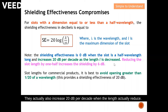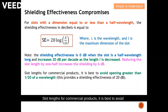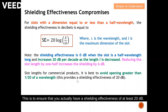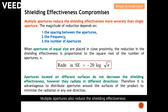Reducing the slot length by one half actually increases the shielding by 6 dB. The slot length for a commercial product is best kept to avoid openings greater than 1/20 of a wavelength. This ensures that you actually have a shielding effectiveness of at least 20 dB.